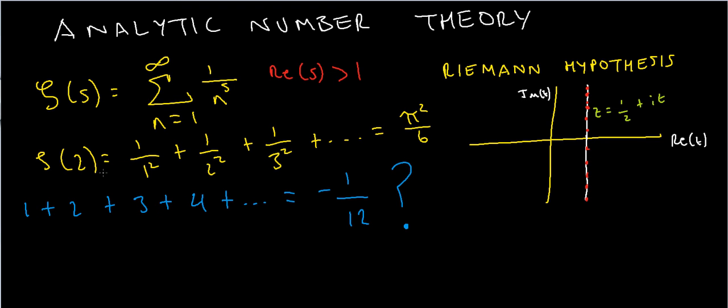For instance, zeta of 2—if I put s equals 2 here—I'd get 1 over 1 squared plus 1 over 2 squared plus 1 over 3 squared, and if I keep on doing that, that's equal to pi squared over 6.